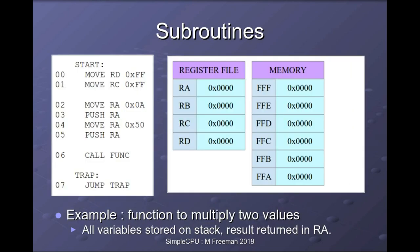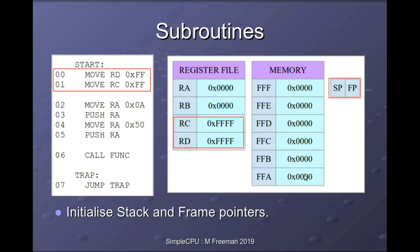To show this in action, we have a simple example where a program calls a function that multiplies two values together. Parameters will be passed to the function using the stack; it will also use the stack for its local variables, and return its result using register RA. First, we initialize our pointers stored in RD and RC — the stack pointer and frame pointer. We load those with their starting address; these 8-bit values FF are sign-extended to 16-bit, giving FFF stored in each register, so both pointers point to the top of memory.